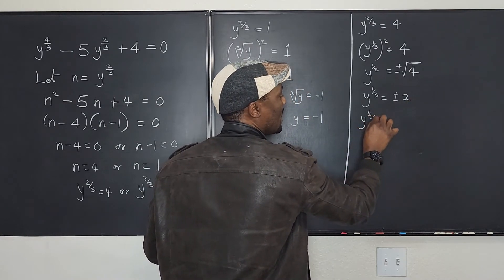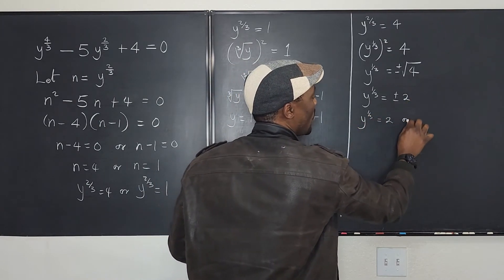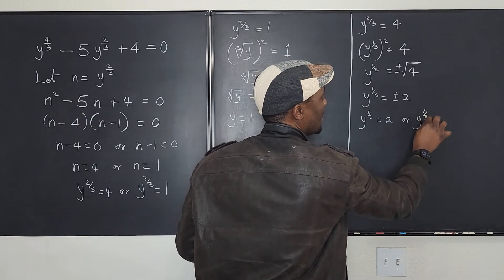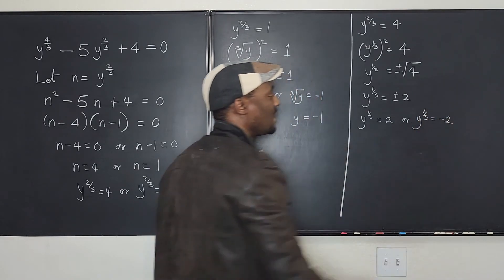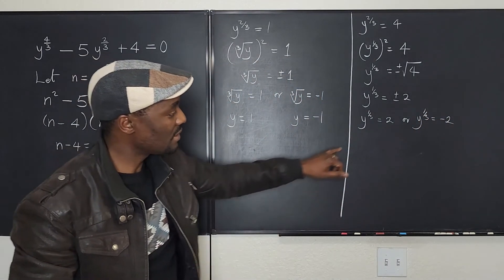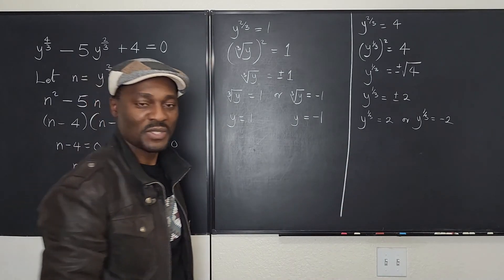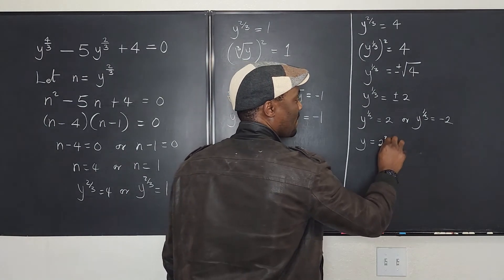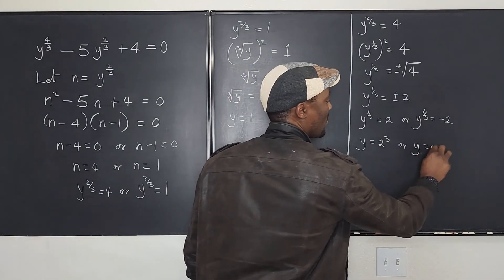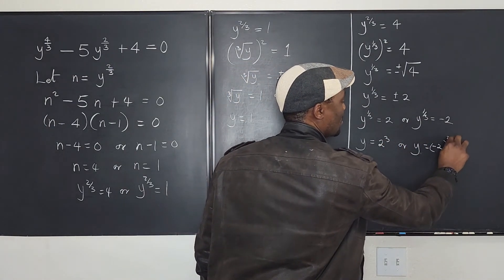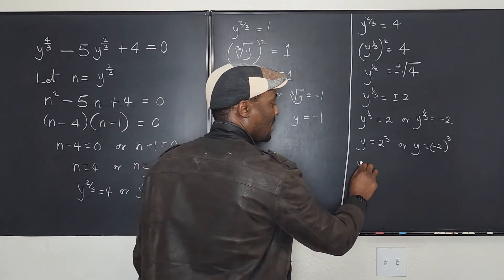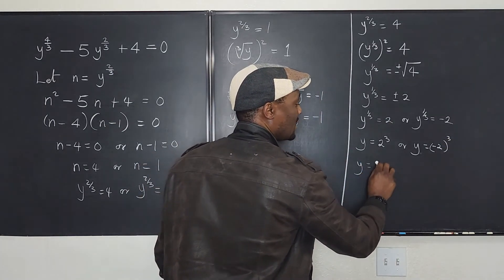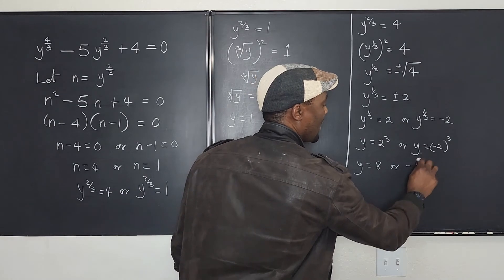So I have y to the one-third equals plus or minus two. So y to the one-third is equal to two, or y to the one-third equals negative two. And I can take the cube of both sides. If I cube both sides, I'm going to have y equals two cubed, or y equals negative two cubed. And that gives me y equals eight or negative eight.